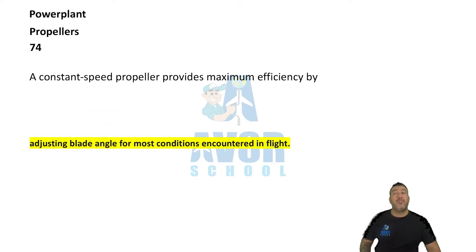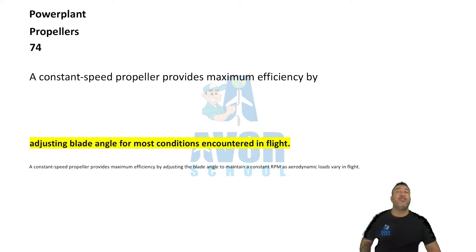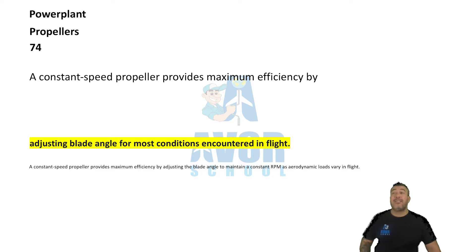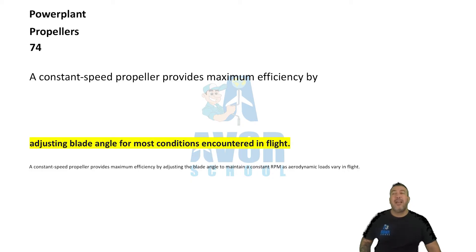Number 74: A constant speed propeller provides maximum efficiency by adjusting the blade angle for most conditions encountered in flight.